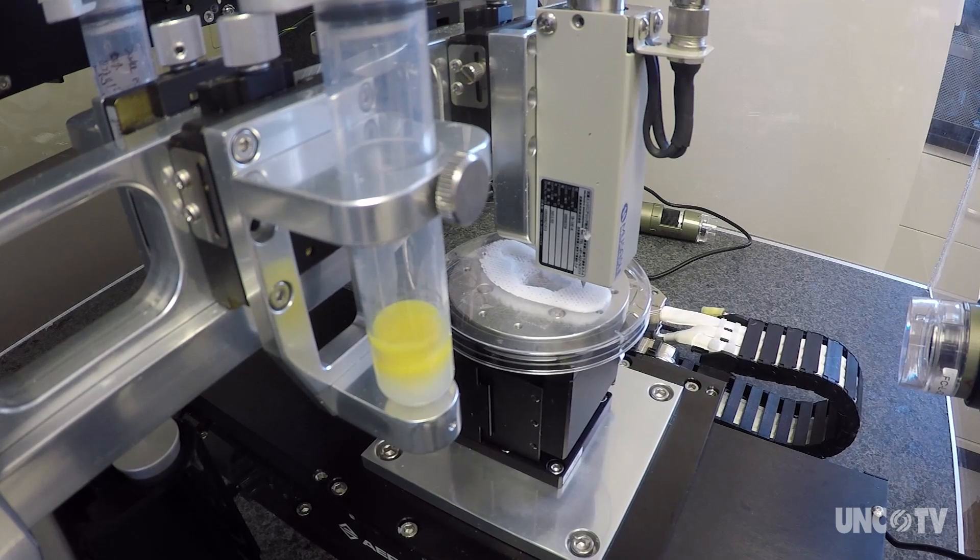And we then print these structures one layer at a time, and as we print the cells we're also printing the structure that holds it, the glue if you will, so we create the structure together.